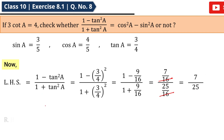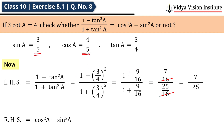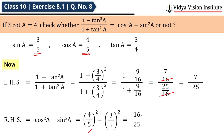RHS = cos²A - sin²A. cos A = 4/5 and sin A = 3/5. Substituting: (4/5)² - (3/5)² = 16/25 - 9/25 = 7/25.